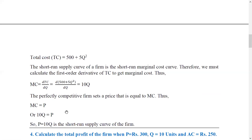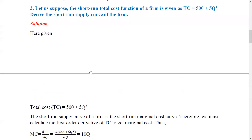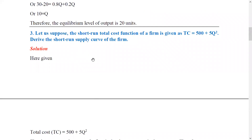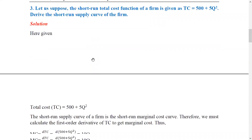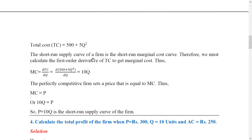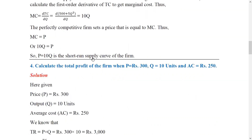The short-run supply curve of the firm is derived as follows: from the total cost function TC = 500 + 5Q², taking the derivative gives MC = 10Q. Setting MC equal to price P, we get P = 10Q. Therefore, the short-run supply curve of the firm is P = 10Q.